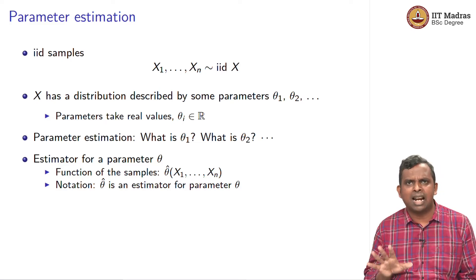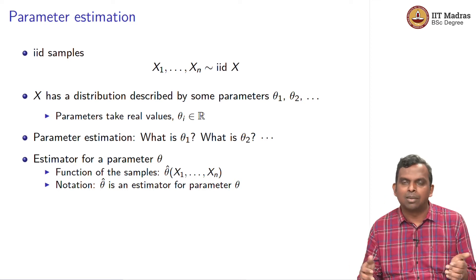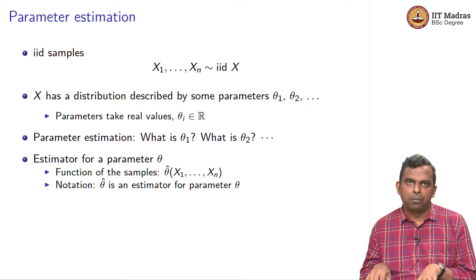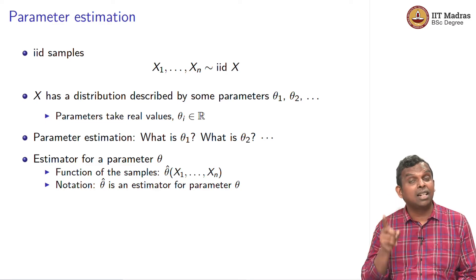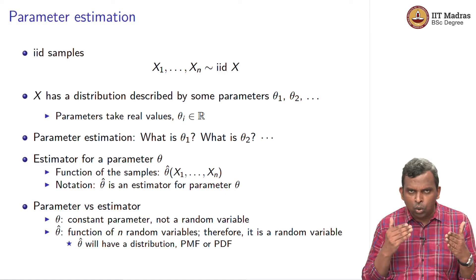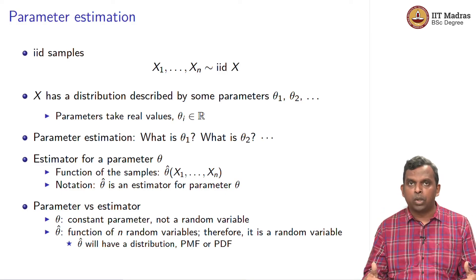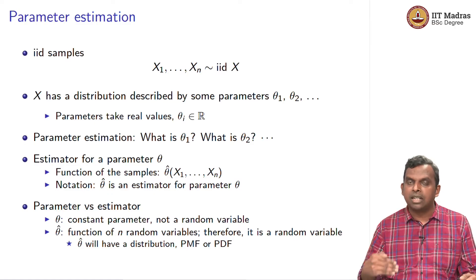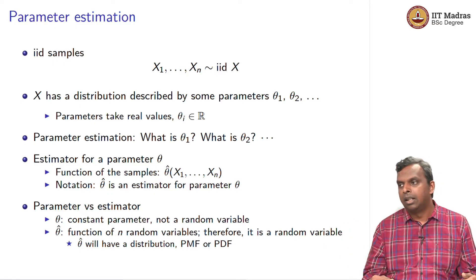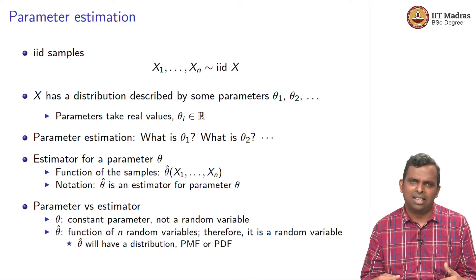Remember x1, x2, through xn are random variables, but in any particular instance you will get one set of samples — some specific numbers — you put them in and you get a number. One needs to know the clear difference between the parameter and the estimator. Theta is a constant parameter — it is not a random variable, it is some unknown number, it is not random in some sense.